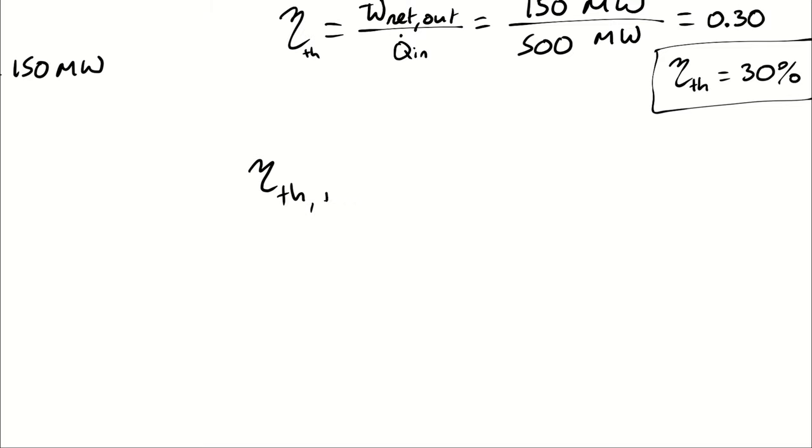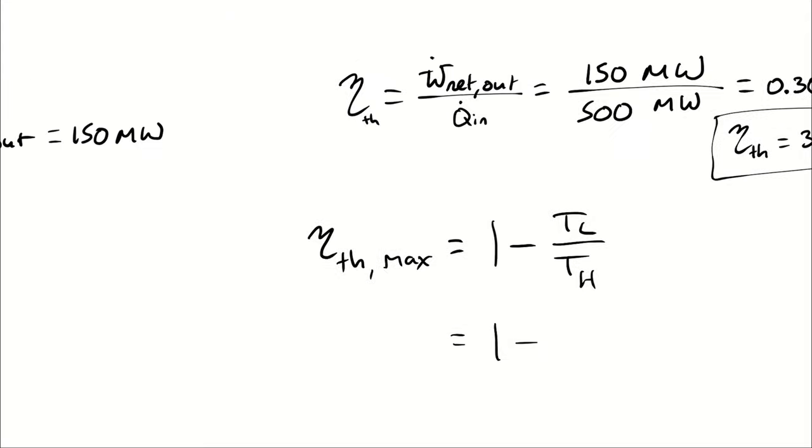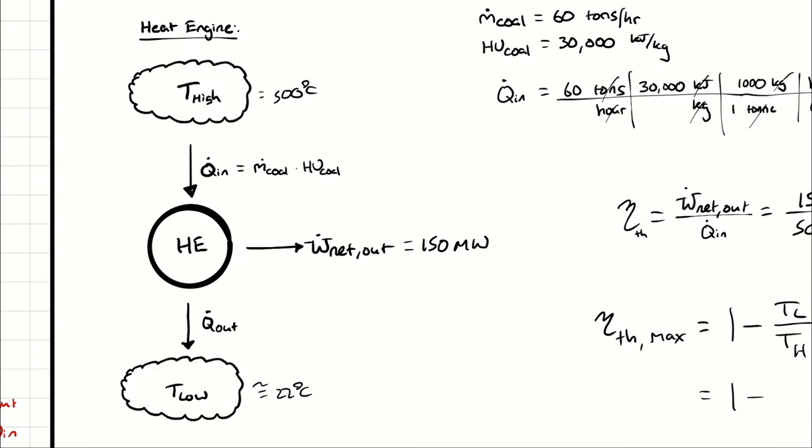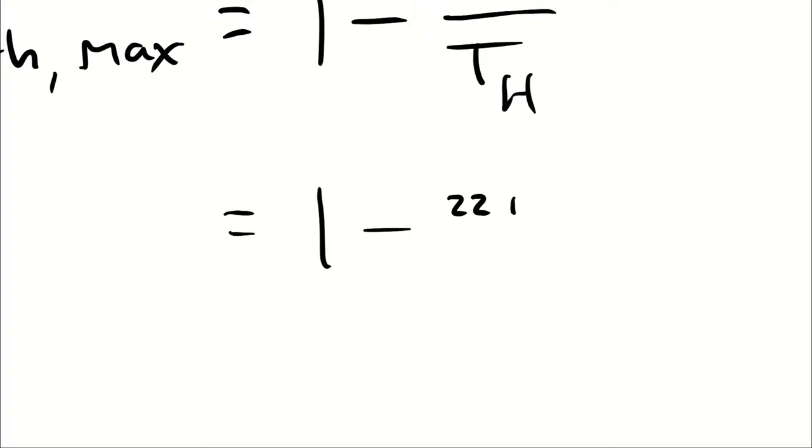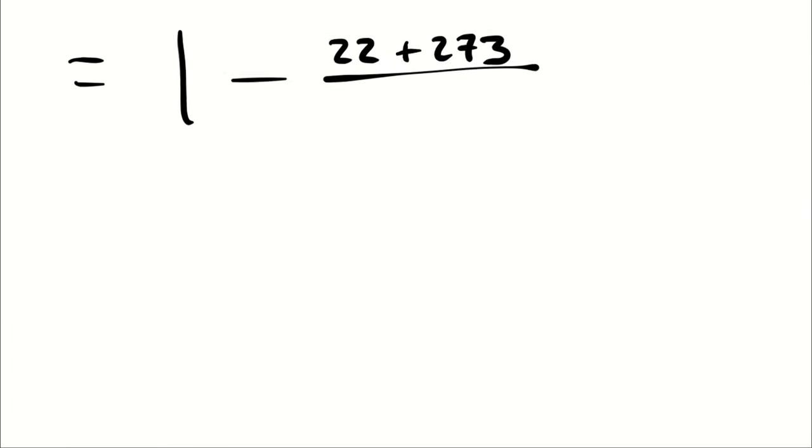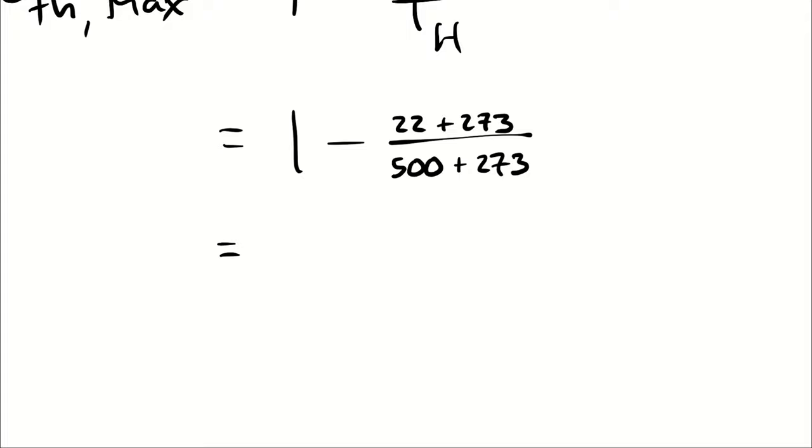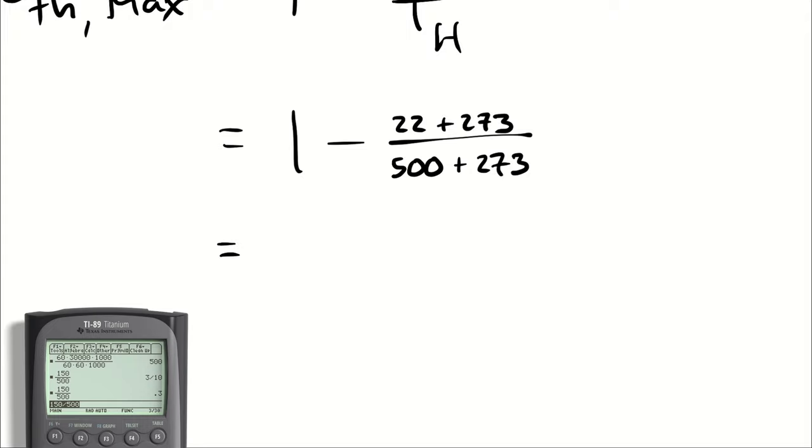So using my equation from earlier, to evaluate the best case scenario, we're going to be treating this as a Carnot heat engine. And when we do that, we are going to be taking 1 minus TL over TH. My low temperature reservoir is operated at 22 degrees. My high temperature reservoir is operated at 500 degrees. And remember, any time I do math, I'm going to need absolute temperature. So let's see if my calculator can work this one out. Calculator says 61.8%.